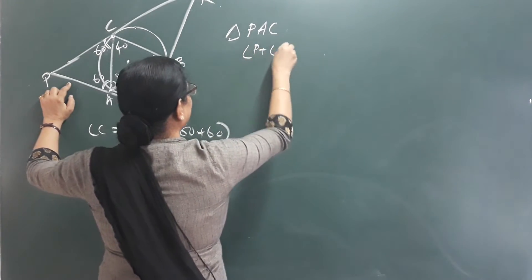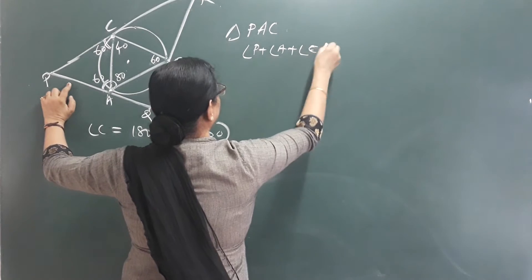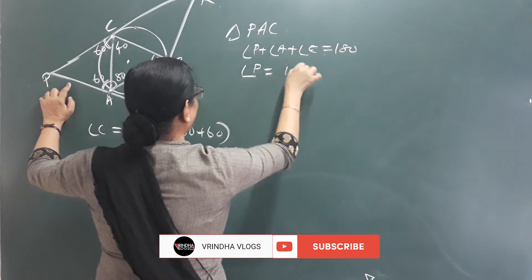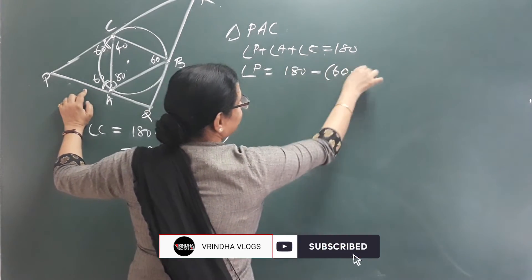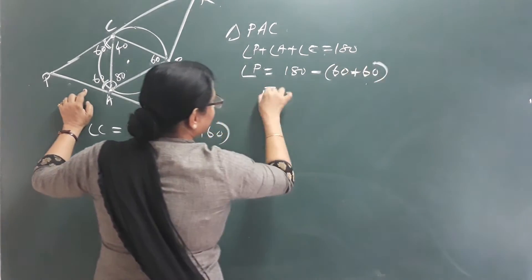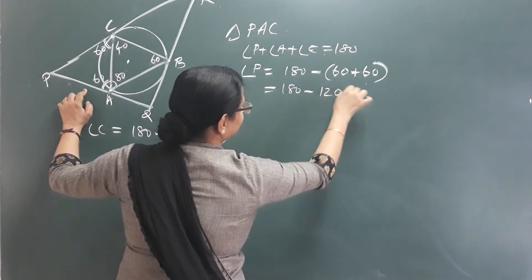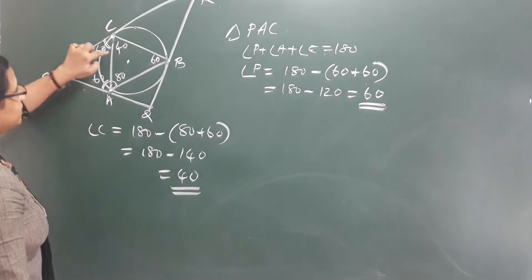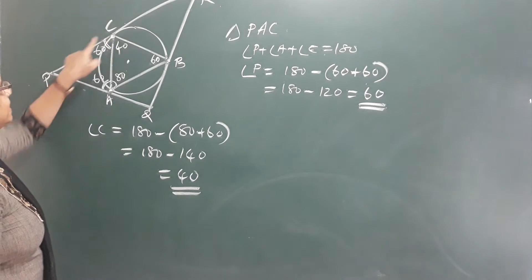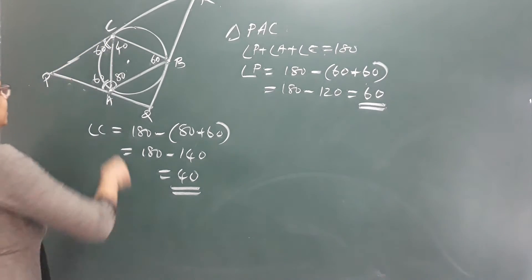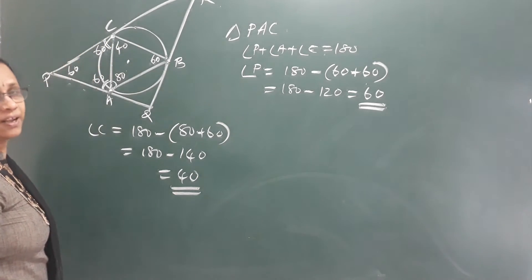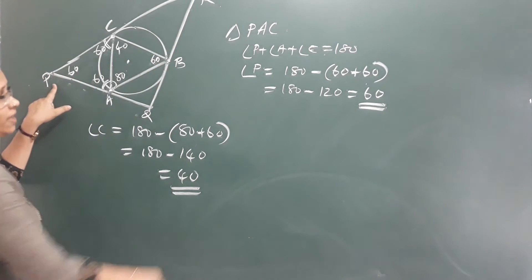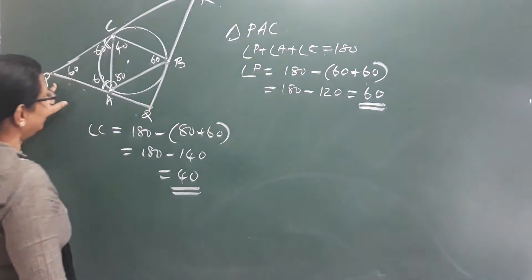Angle P plus angle A plus angle C that is equal to 180 degrees. Angle P is 180 minus (60 plus 60). That is 180 minus 120, that is equal to 60. Angle P is 60. And in triangle PQR, angle Q is our next result.